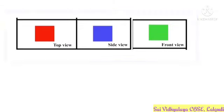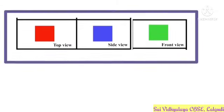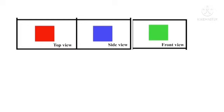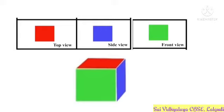Let me explain with one example. All three views of one object are the same. All these are the shape of a square and have the same size. This is a box.